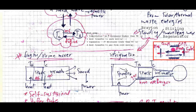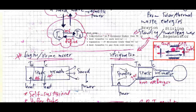The standing wave type of thermoacoustic engine uses the Brayton cycle. The geometry of such devices includes a resonator, the engine itself, and two reservoirs at hot and cold temperatures. Inside the engine is the stack.